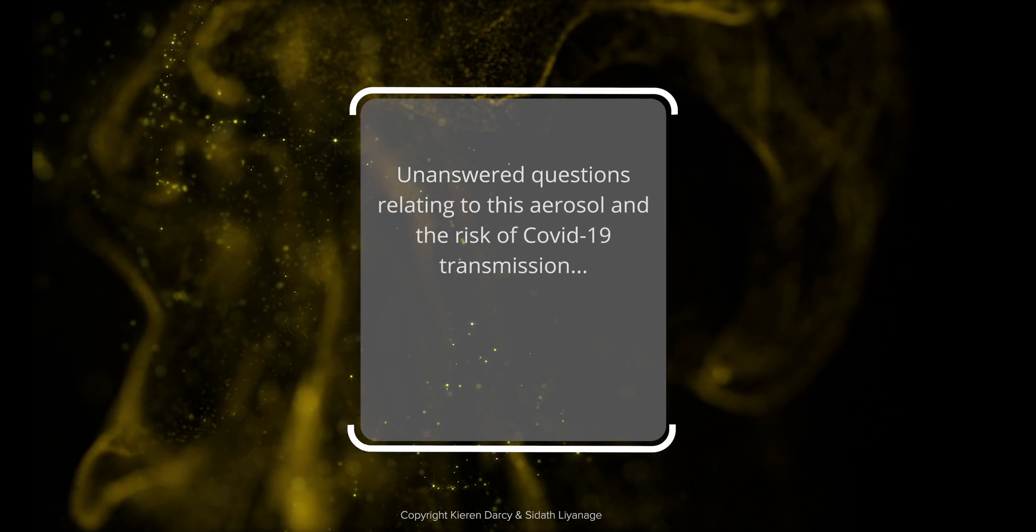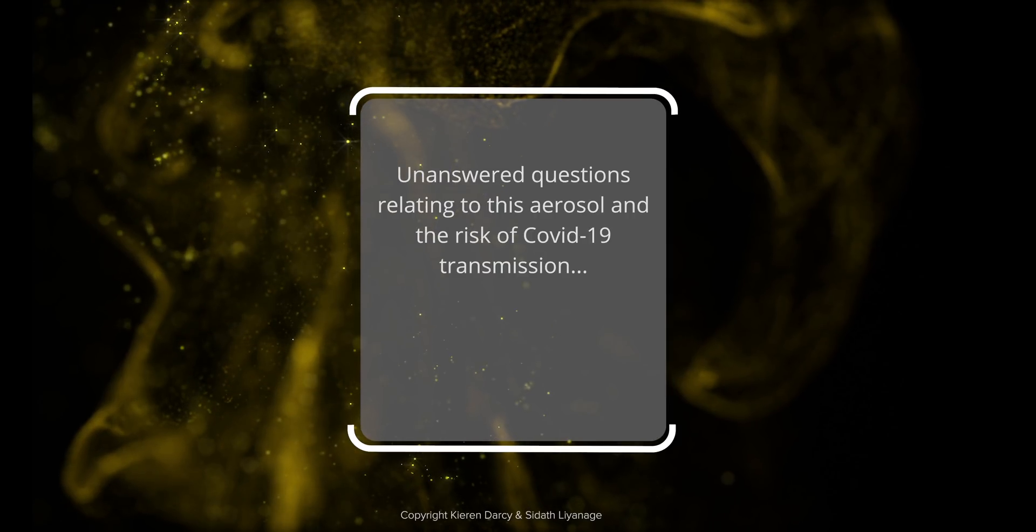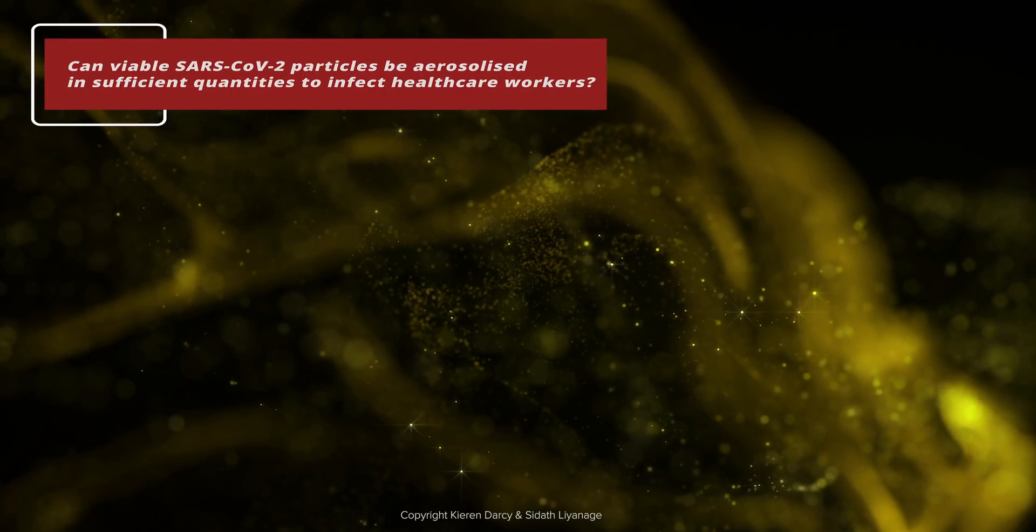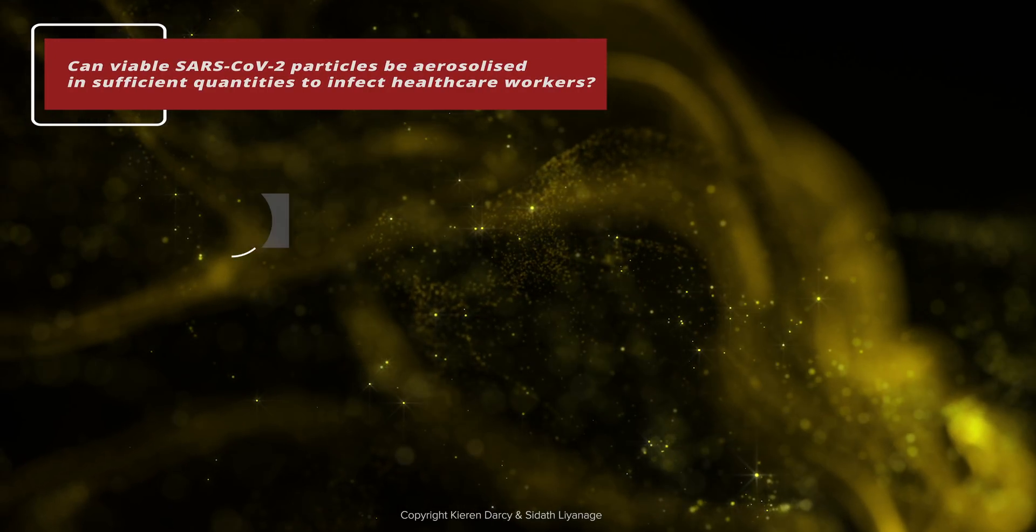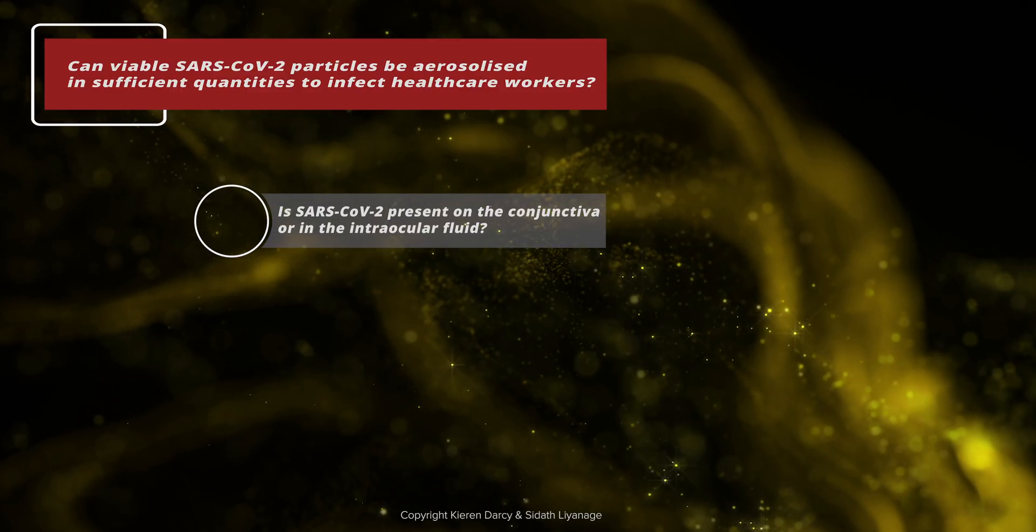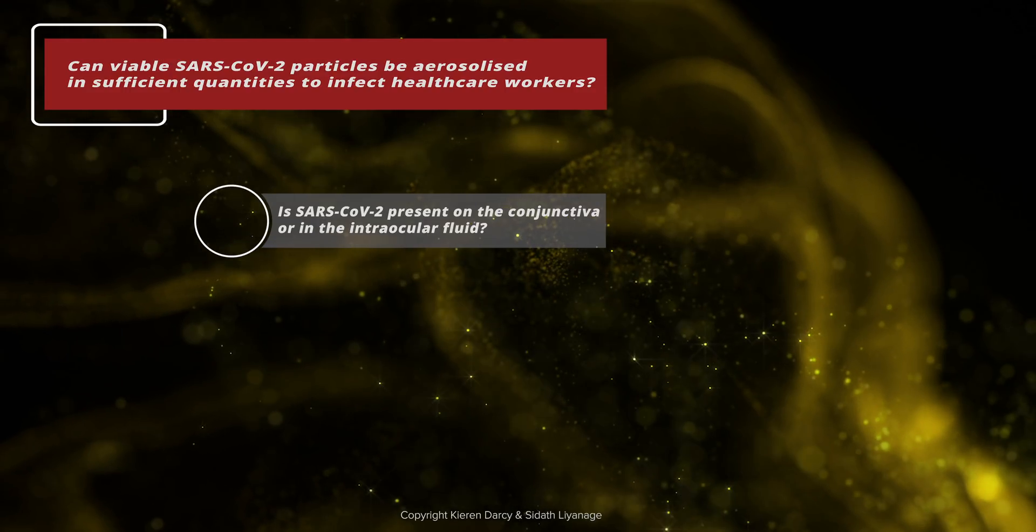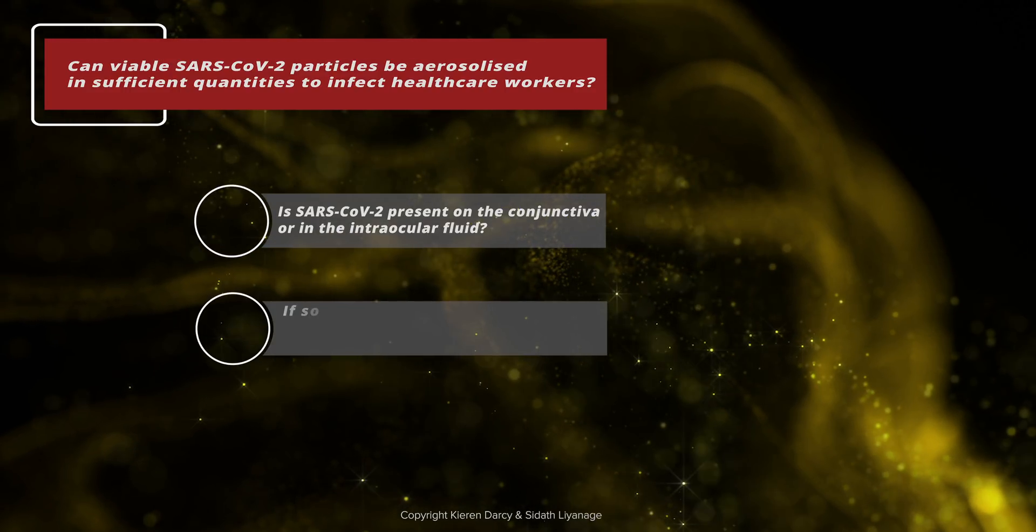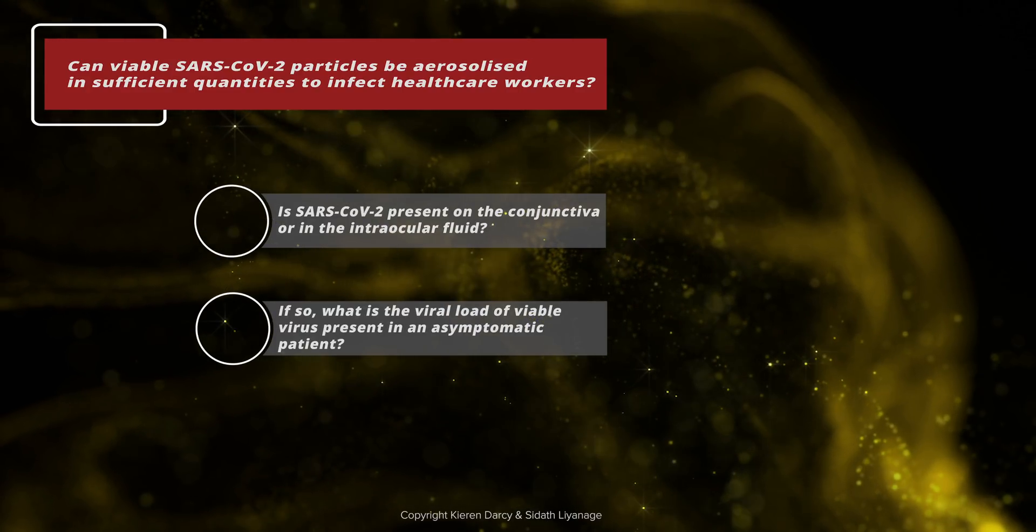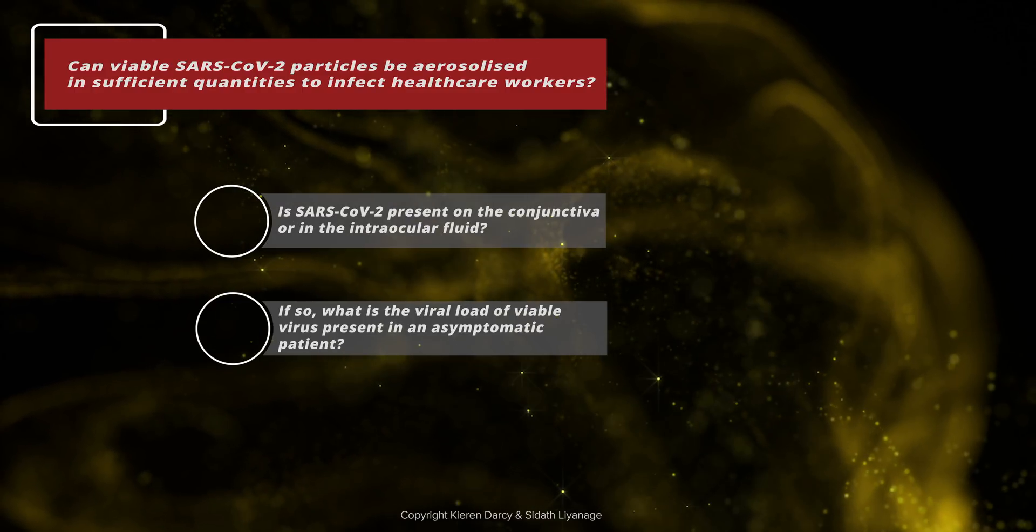Now that aerosol has been demonstrated, we have some unanswered questions relating to this aerosol and the risk of COVID-19 transmission. Can viable SARS-CoV-2 particles be aerosolised in sufficient quantities to infect healthcare workers? To help answer this, we need to understand where is SARS-CoV-2 found in the eye? More specifically, for cataract surgery, is it present on the conjunctiva or the intraocular fluid? If it is present in either of these anatomical locations, in an asymptomatic patient, is the viral load sufficient to represent a risk?